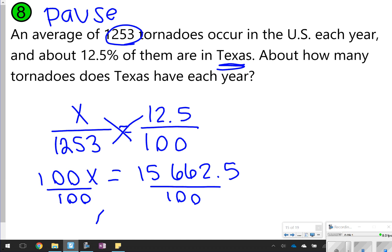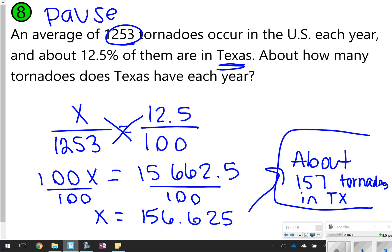So we can say about, let's maybe just round that up to 157, so about 157 tornadoes in Texas. Okay, you can't have a point of a tornado. It's either all or nothing there.